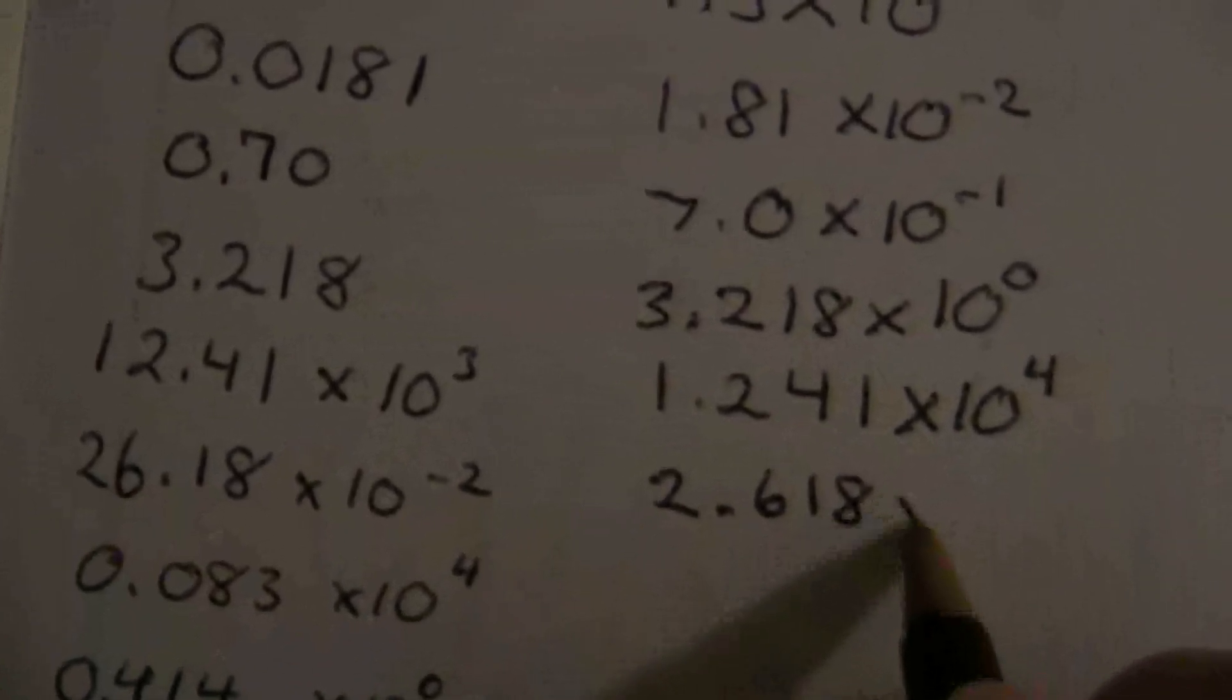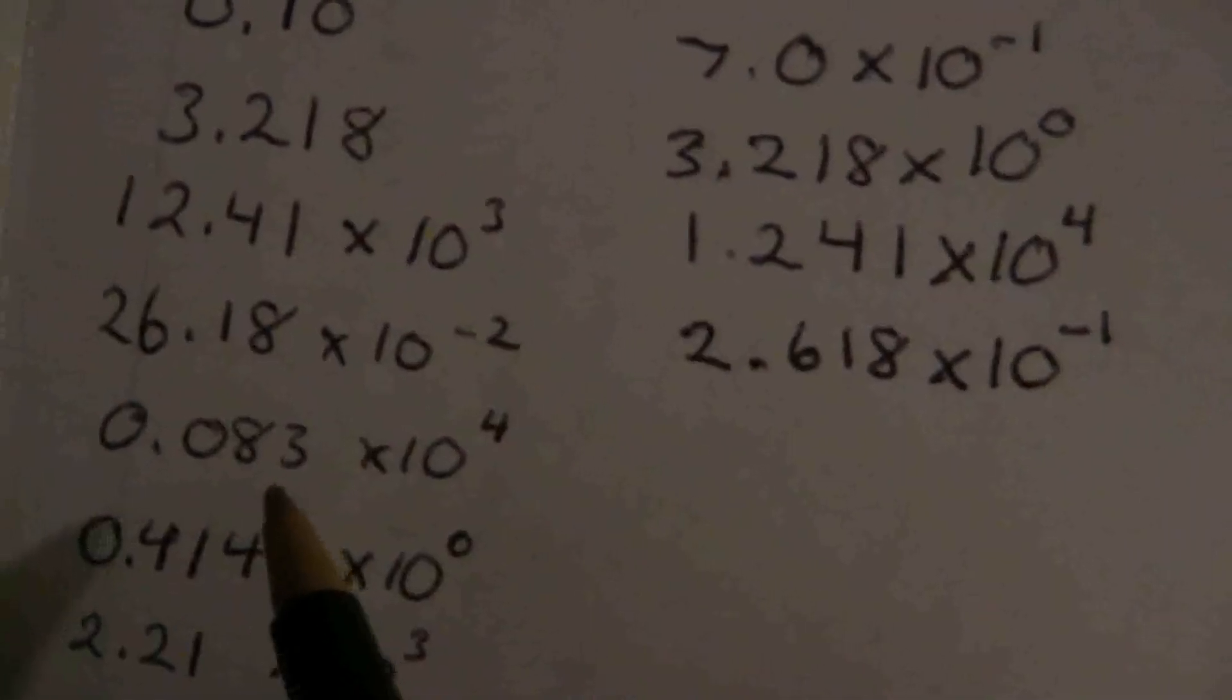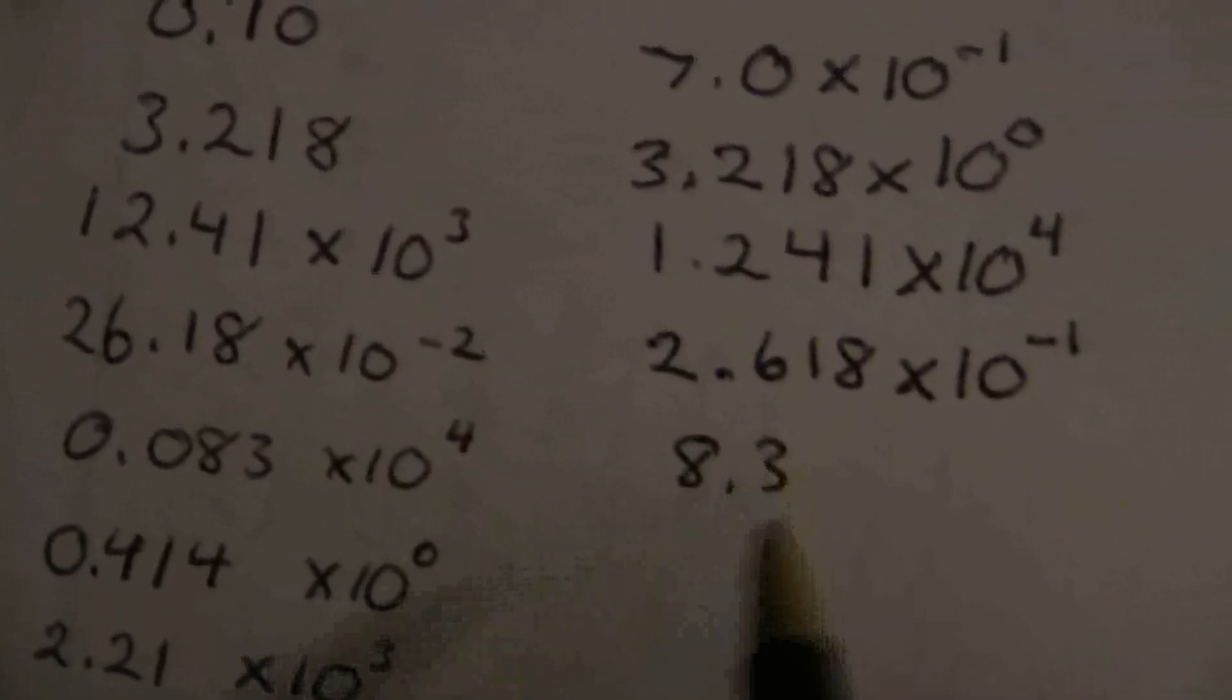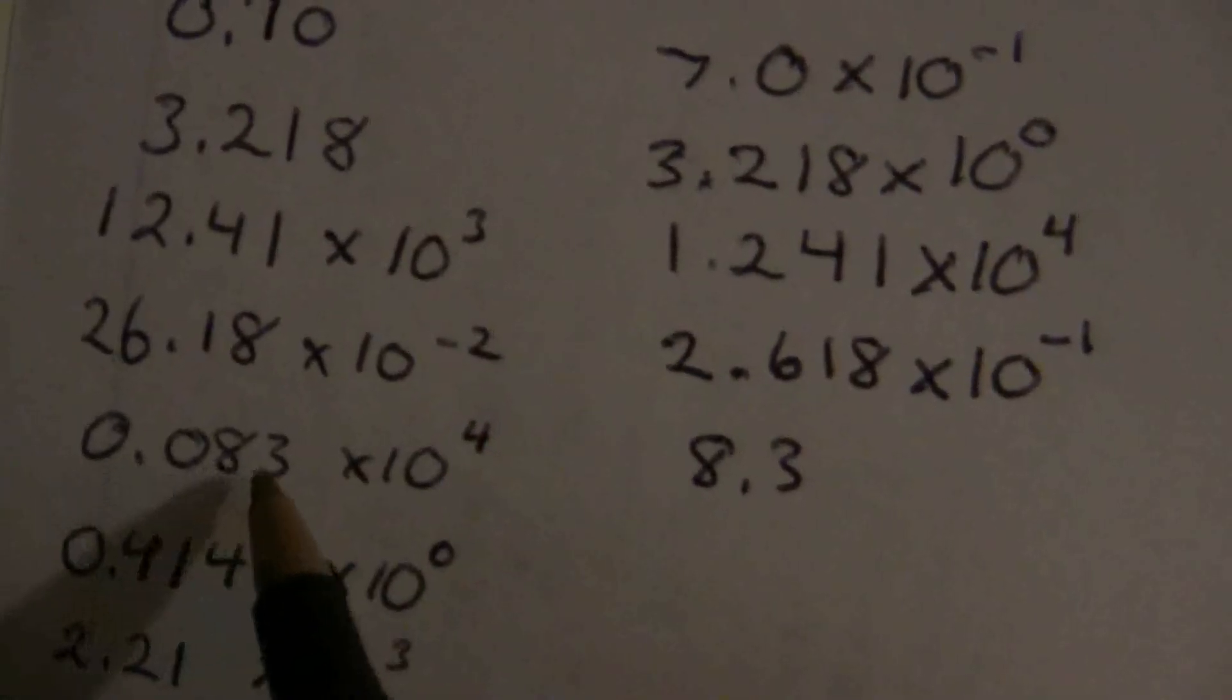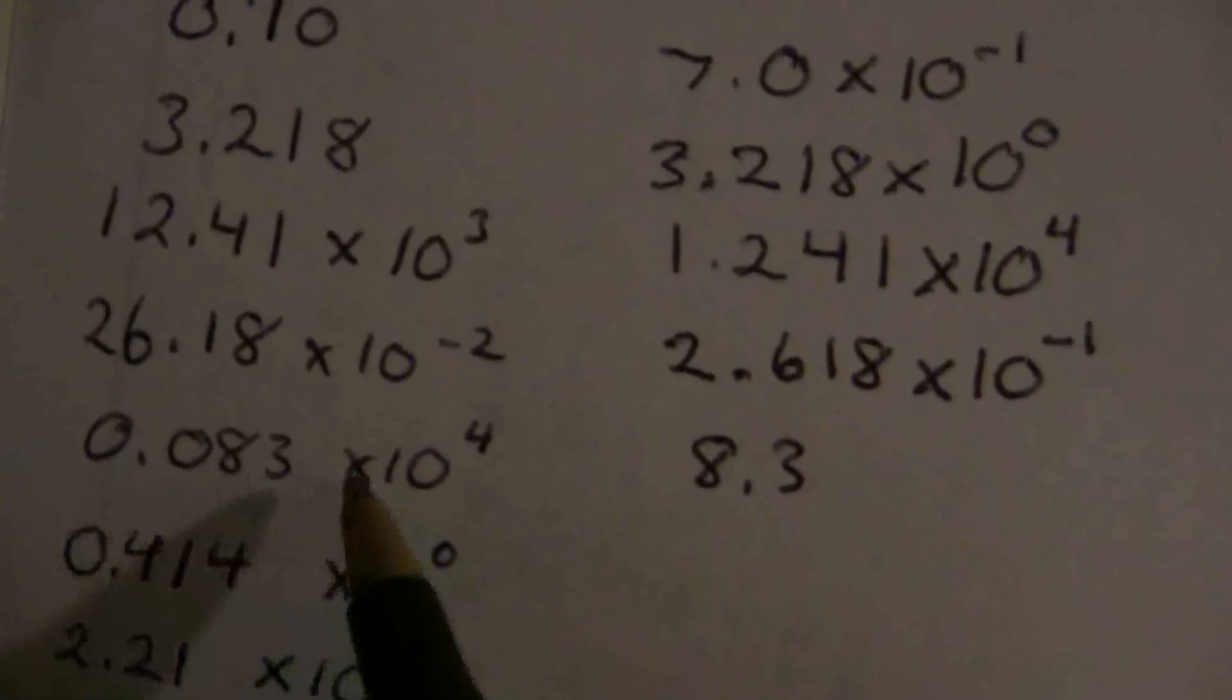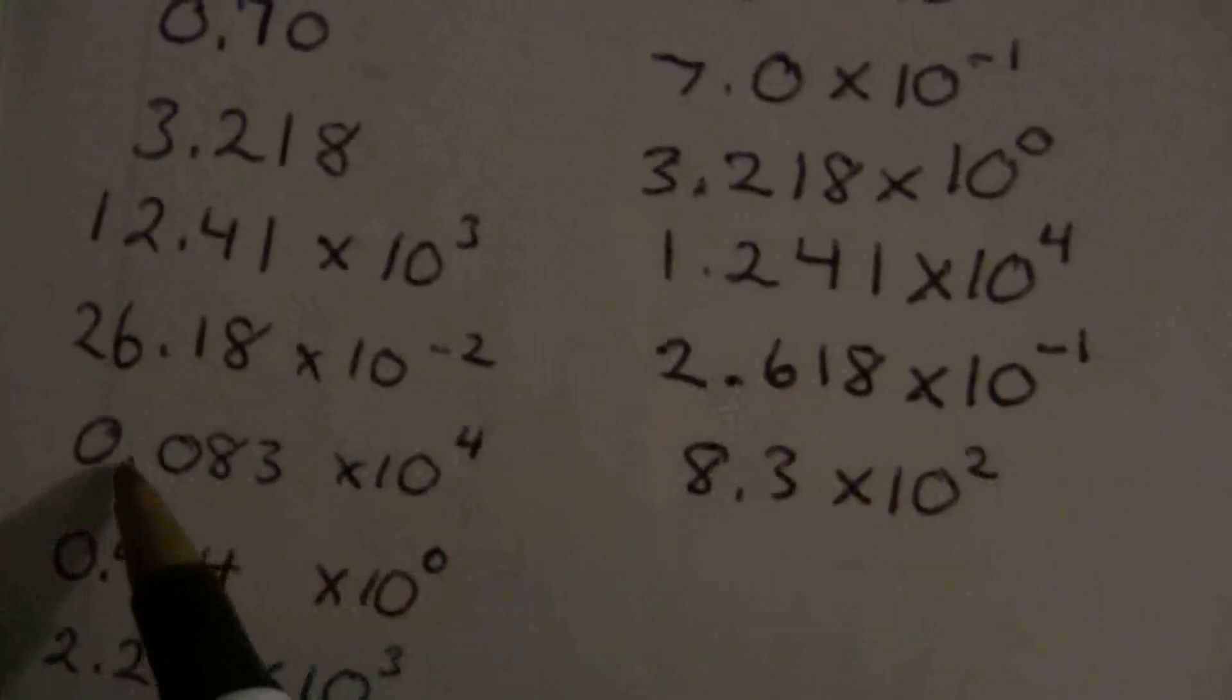Here we have, will be 8.3 times ten, not four places to the right, but only two places to the right.